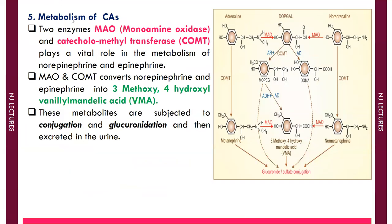The last step is metabolism of catecholamines. Catecholamines are metabolized by two enzymes: monoamine oxidase (MAO) and catechol-O-methyltransferase (COMT). These two enzymes convert adrenaline and noradrenaline into 3-methoxy-4-hydroxymandelic acid. These metabolites undergo glucuronidation and conjugation reactions and are then excreted in urine. This completes the biosynthesis of catecholamines.